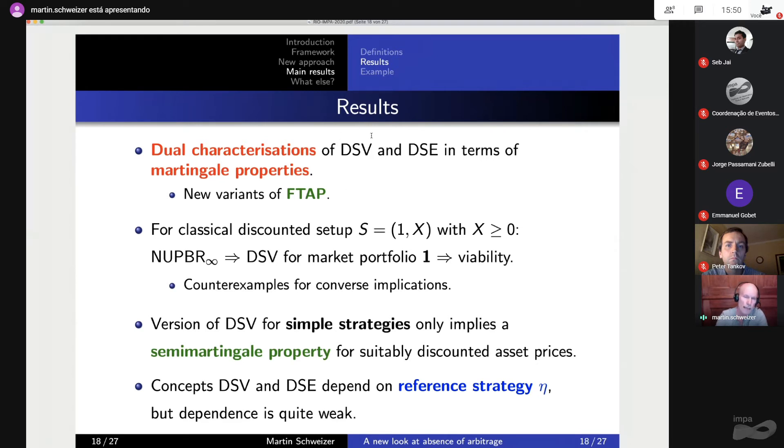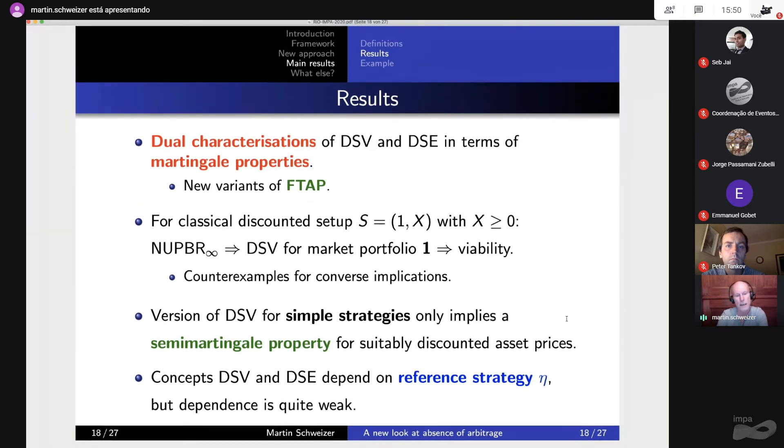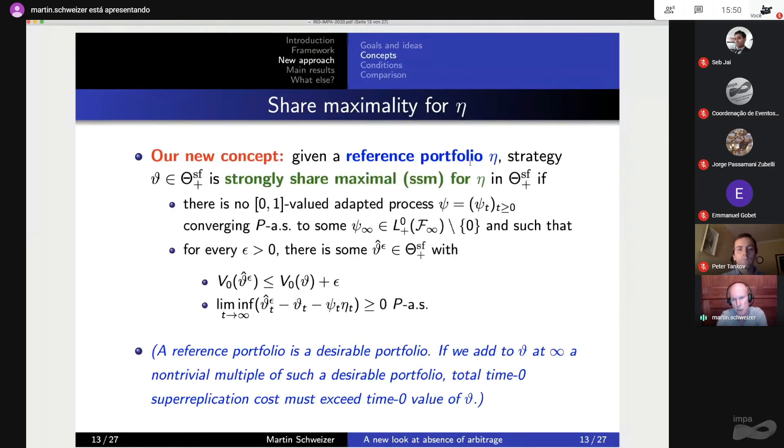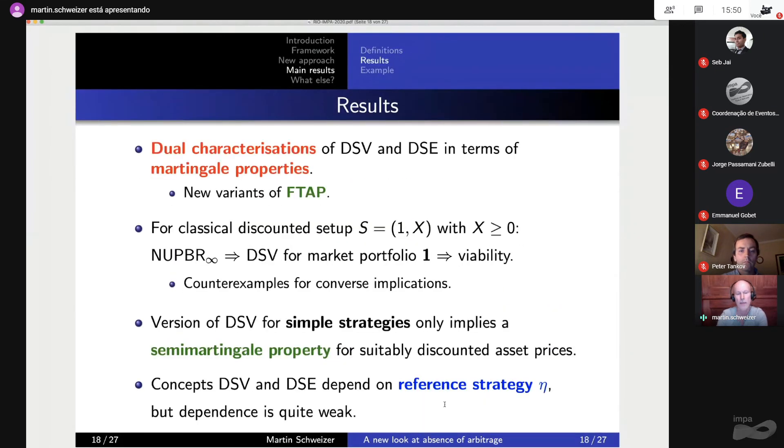You can also look at the version of this absence of arbitrage concept for simple strategies only, and if you have that, then you get automatically, without assuming that, a semi-martingale property for suitably discounted asset prices. And I should also say that these concepts depend, as you can see in the definition here on a reference portfolio or a reference strategy, but that dependence is really quite weak. If you have different reference strategies, and these are reasonably comparable, in a sense we can make precise, then the absence of arbitrage concepts are the same.